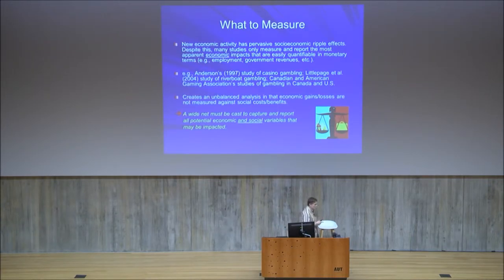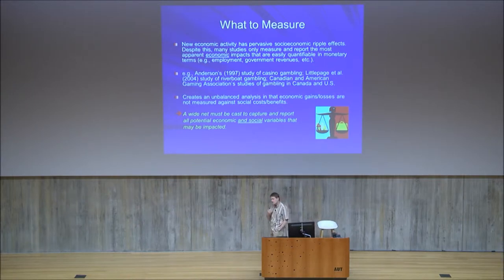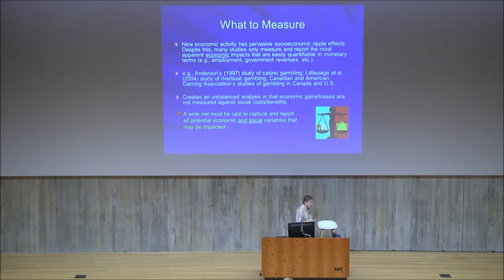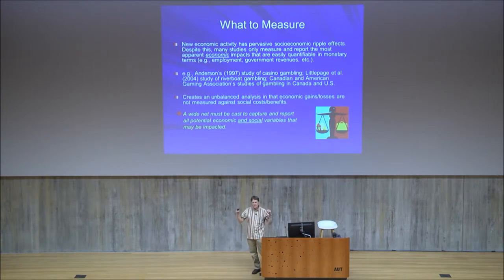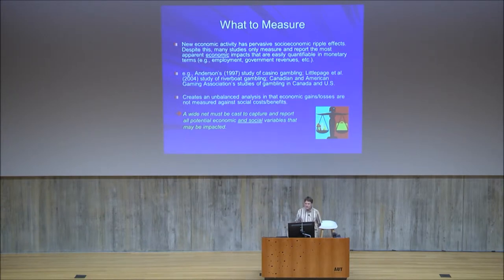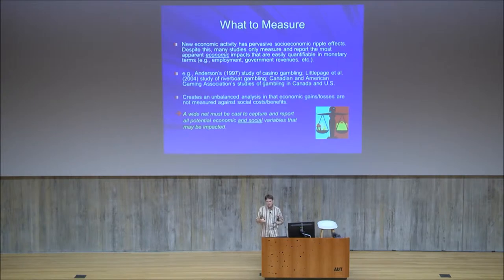Methodological considerations — first question is what to measure. Any new socioeconomic activity has pervasive socioeconomic ripple effects through the economy. Despite this, a lot of poor quality studies have only measured economic impacts — things like jobs and revenue, things easily quantifiable in monetary terms. The industry is particularly good at putting out reports talking about the so-called socioeconomic benefits of gambling, really just focusing on the economic side. This creates a very unbalanced analysis, as economic gains and losses are not measured against social costs and benefits. The first principle of a good socioeconomic impact study is to measure both social and economic impacts.